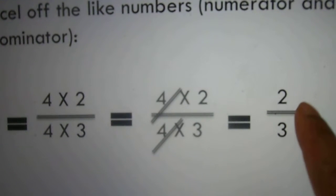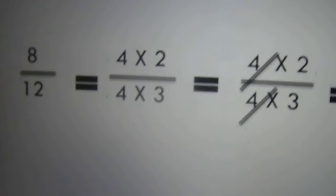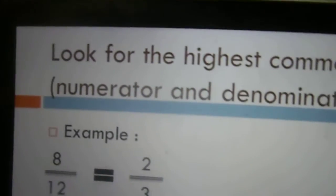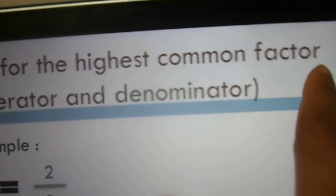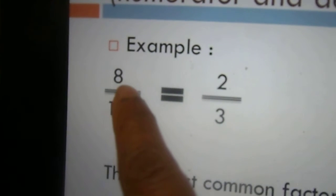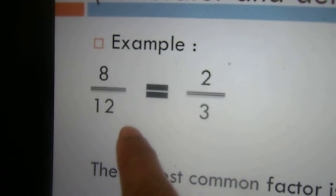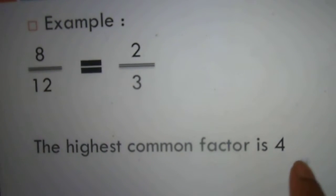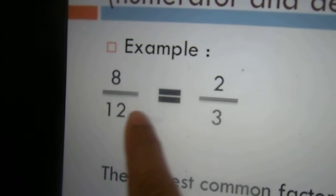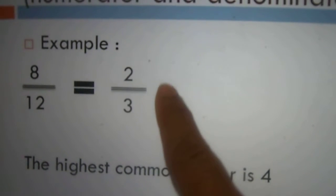This gives us the same answer as the first step. The third step says: look for the highest common factor for both the numerator and the denominator. In this example we have 8 over 12. The highest common factor of 8 and 12 is 4. If 4 divides 8, it gives us 2, and if 4 divides 12, it gives us 3. So the answer still remains 2 over 3.